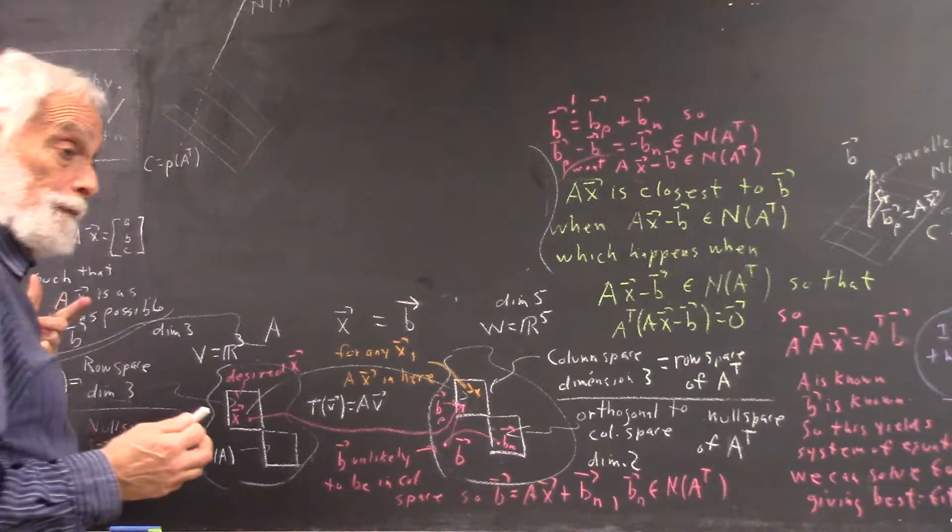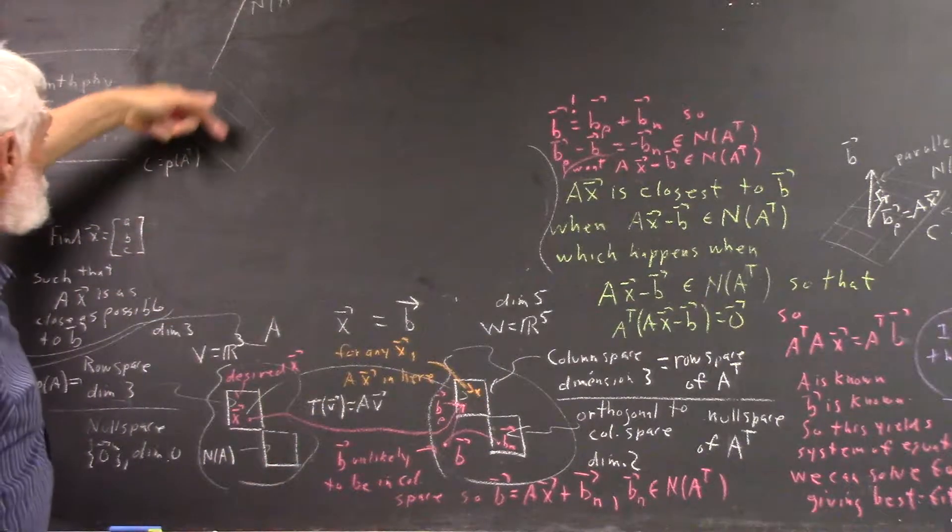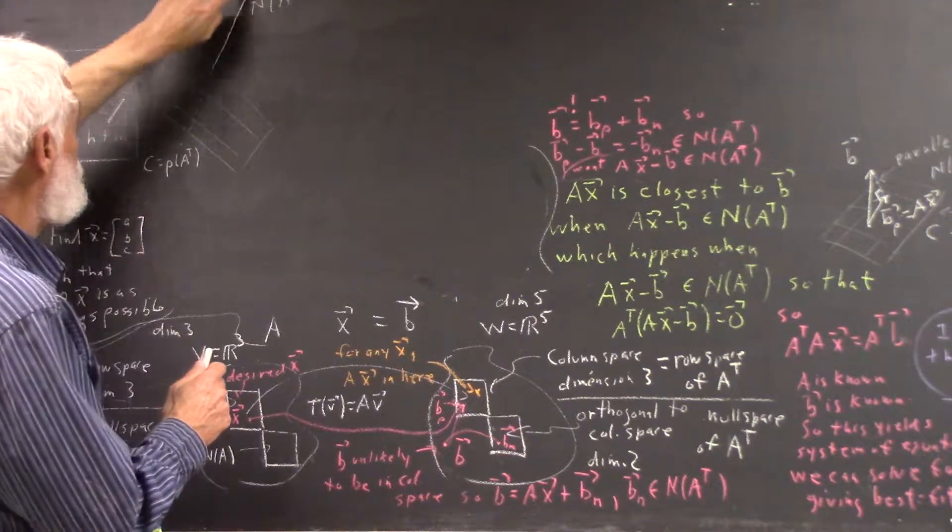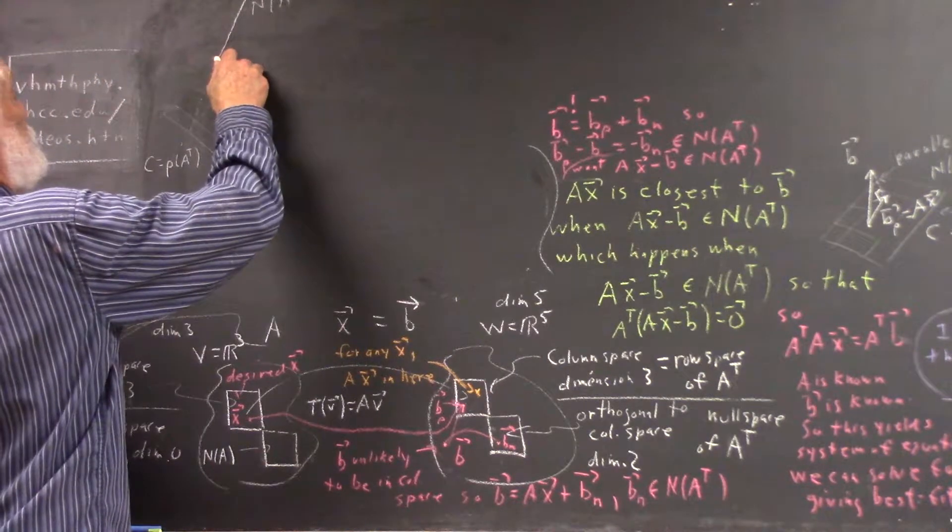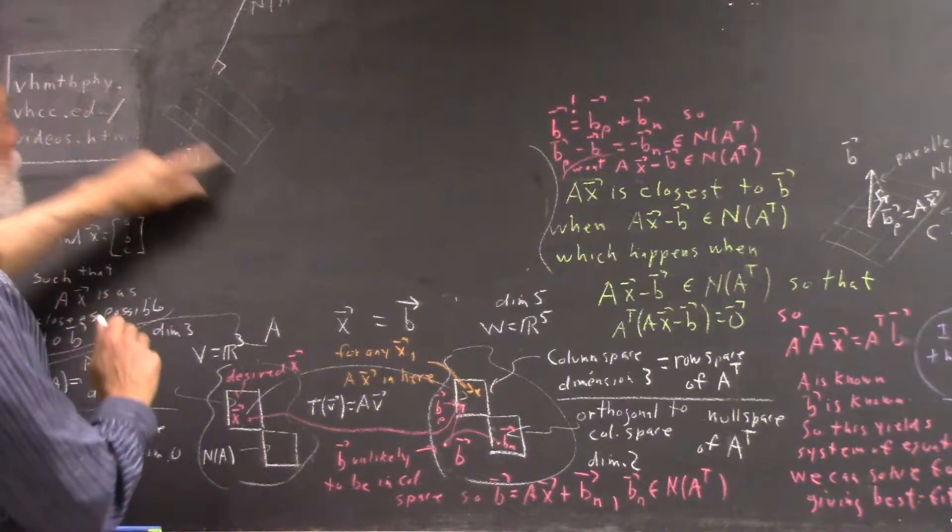And the null space could also be any-dimensional, but since I've already used a plane here, I'm going to represent the null space by this line and indicate that the null space is orthogonal to the column space.